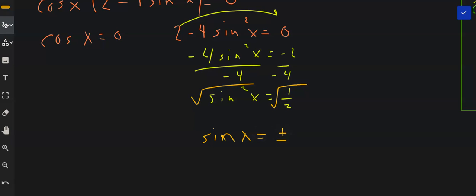We end up with sine x equals plus or minus. Now remember, the square root of 1 is still 1. And then the square root of 2. And of course, if we rationalized that, we would see it was radical 2 over 2.